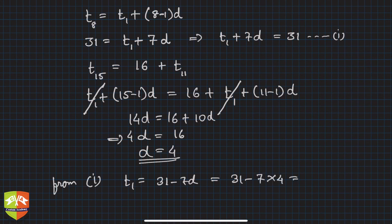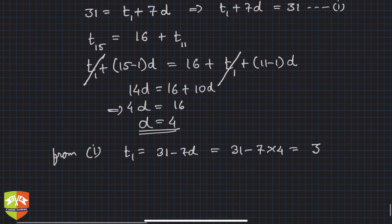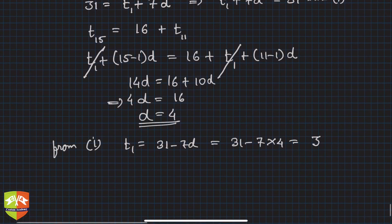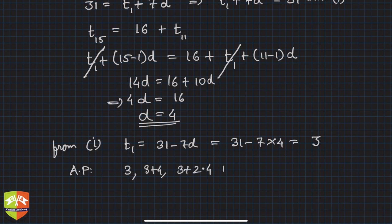will be 3 + 2×4, fourth term will be 3 + 3×4, and so on. So hence this is 3, 7, 11, and 15, and so on. This is the given AP. This is what they were asking for.